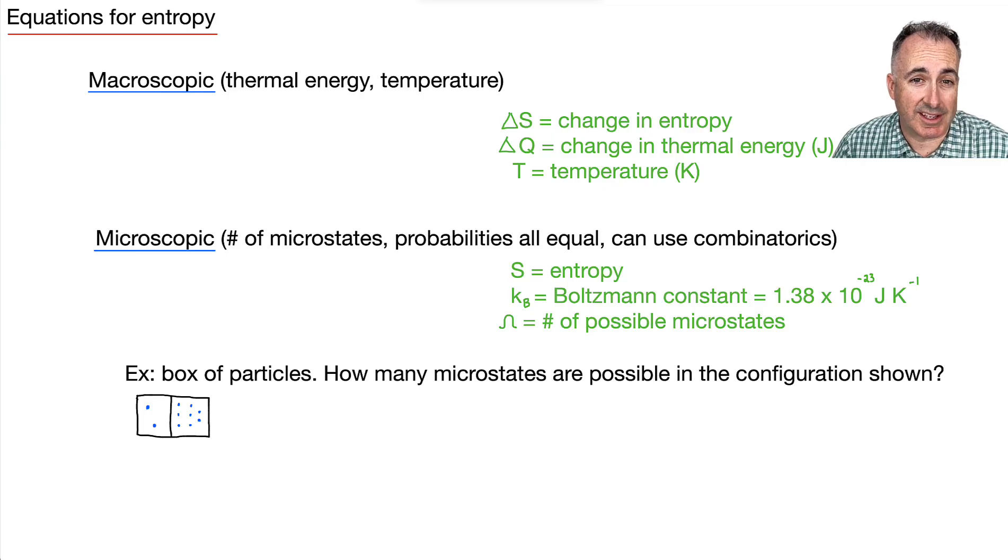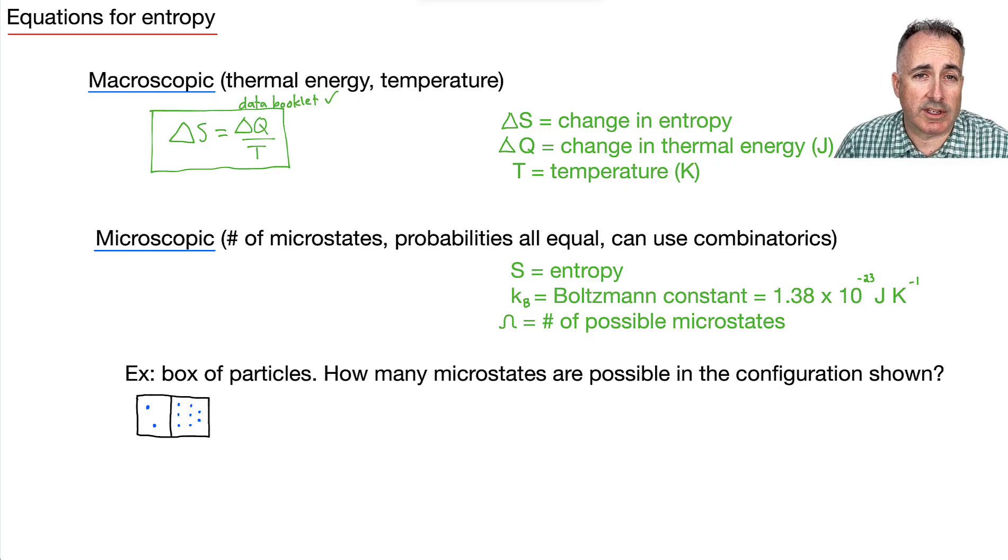Now let's start by concentrating on the equations that we need for this. So macroscopic, so on a larger scale, things like thermal energy or temperature. We have this equation here: delta S equals delta Q over T. What are these different variables? Delta Q, we know that one is a change in thermal energy, so that must be in joules. We have T, which is temperature, which will be measured in Kelvin. So what will entropy then be measured in? It'll be joules per Kelvin.